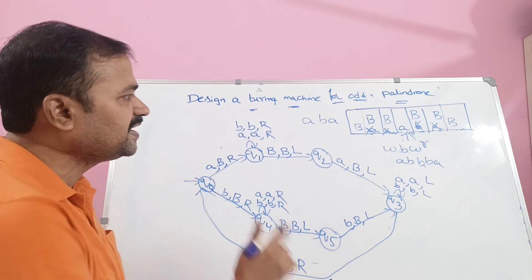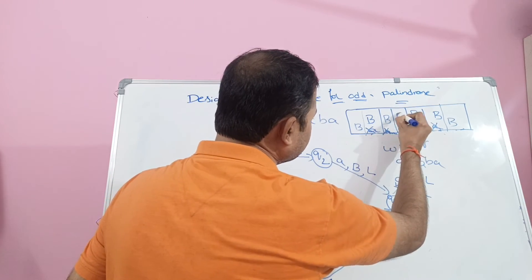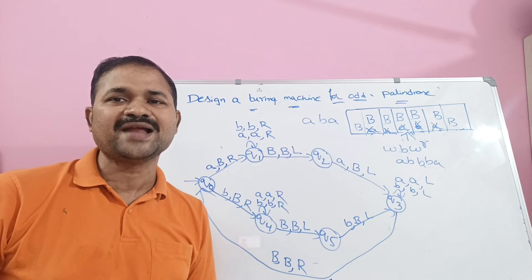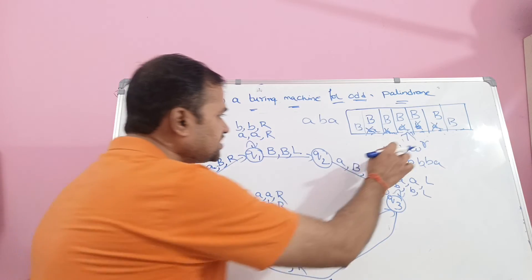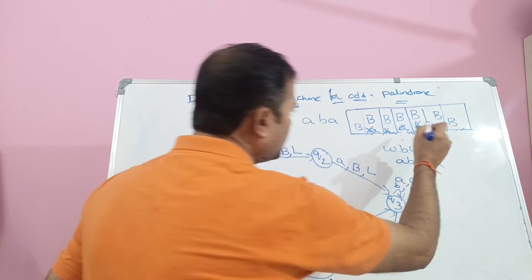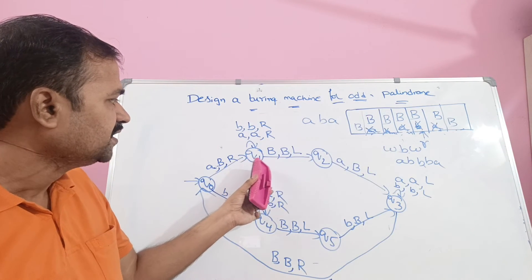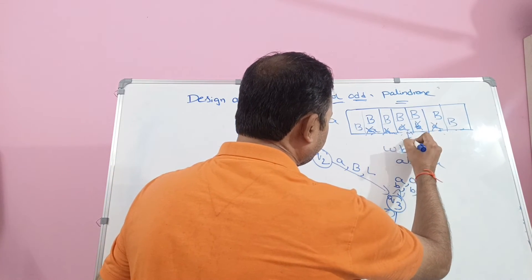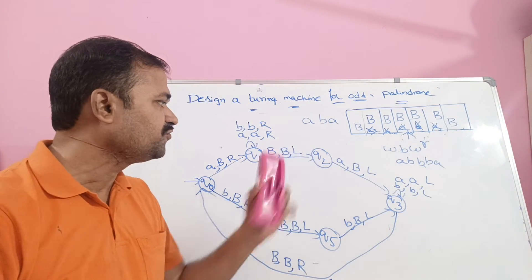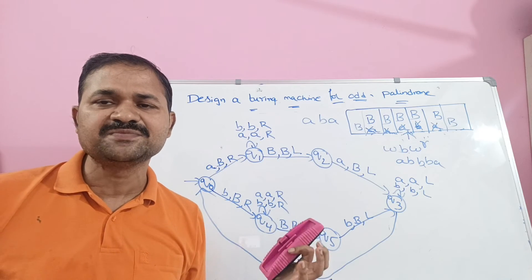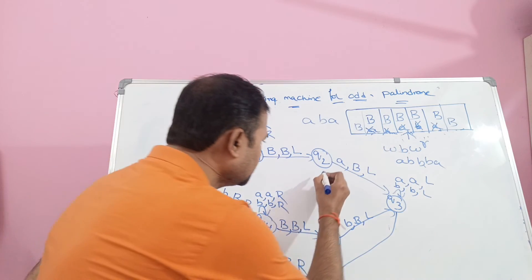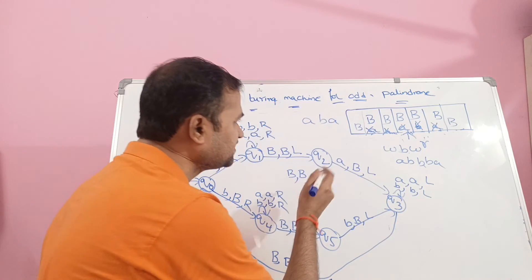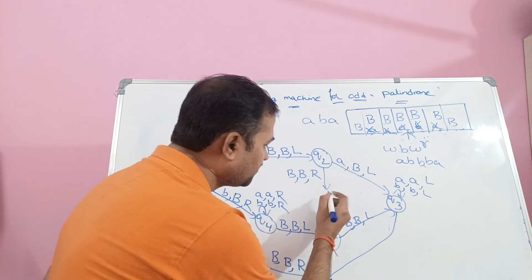If we read A, we convert it into the blank symbol. Once all the symbols are translated and converted into the blank symbol, we can say it is a palindrome string. After changing the whole string and translating it into blank symbols, move the head right. We are now at Q1. If we read B on Q1, move the head towards the left, arriving at Q2. Since all symbols are translated to blank, we apply blank symbol on Q2.